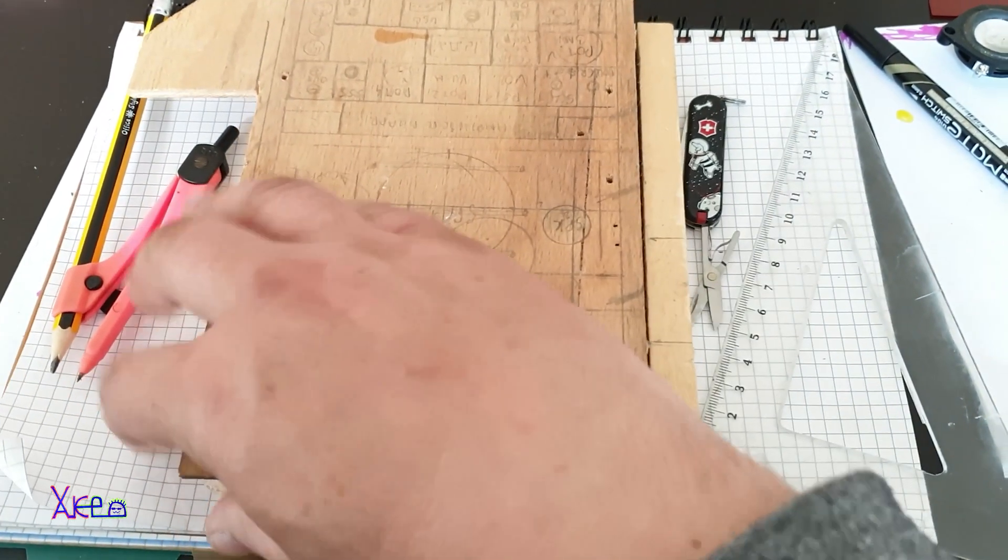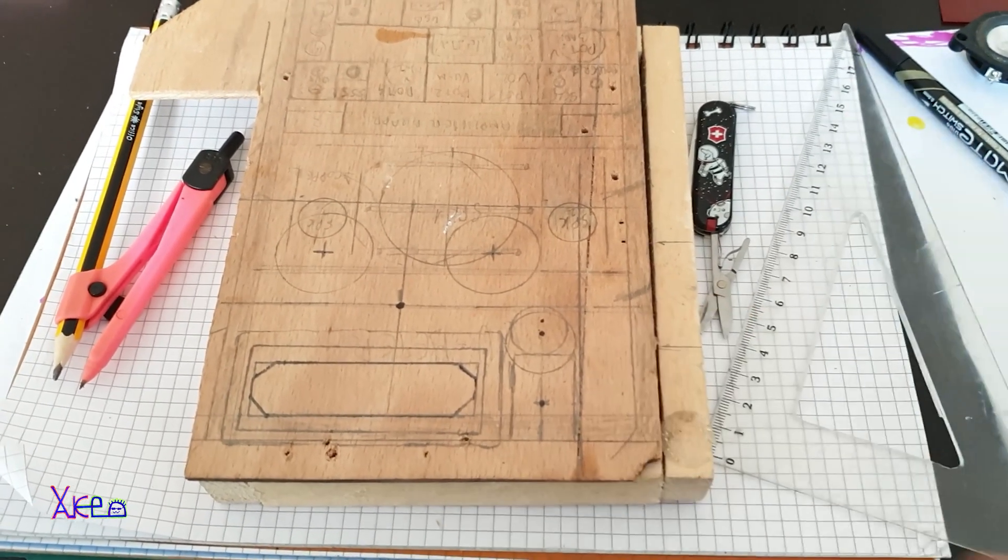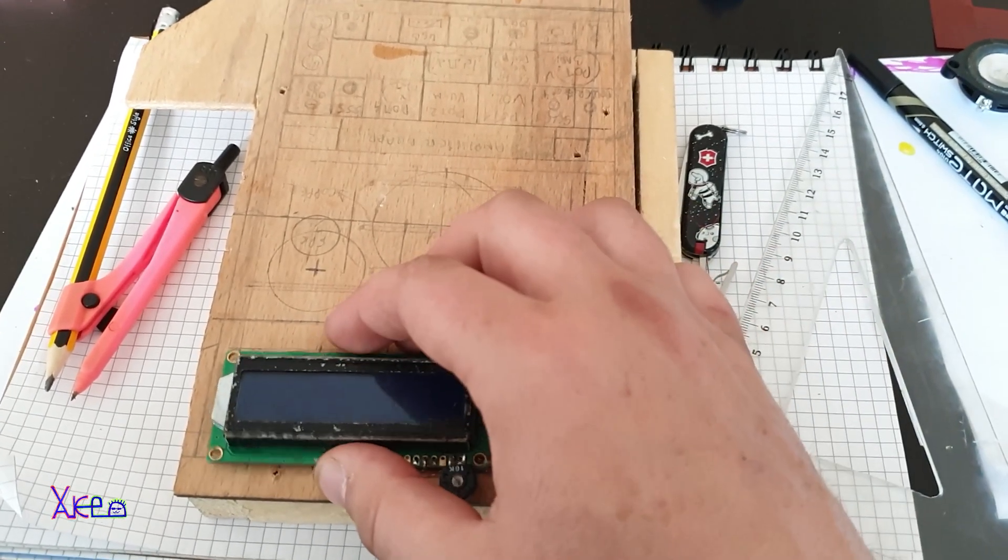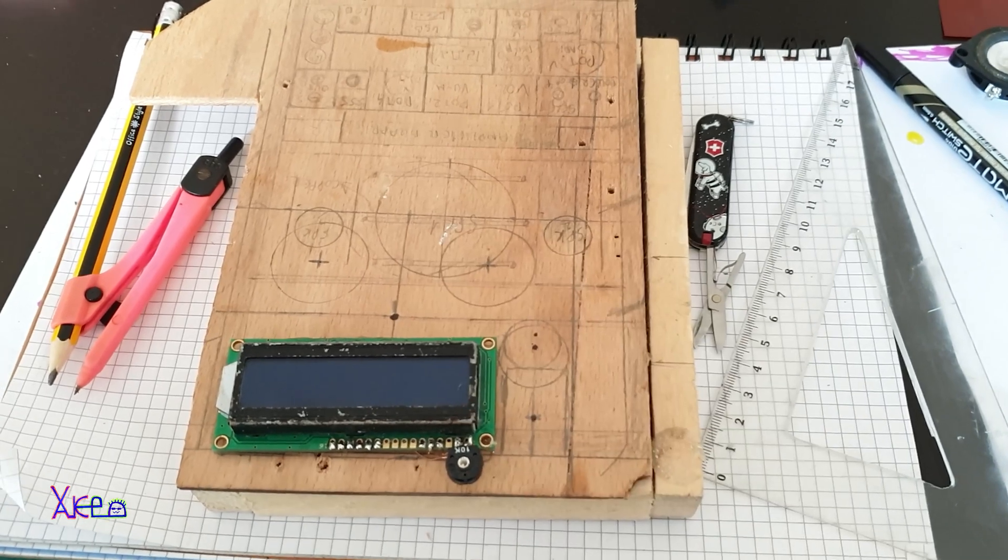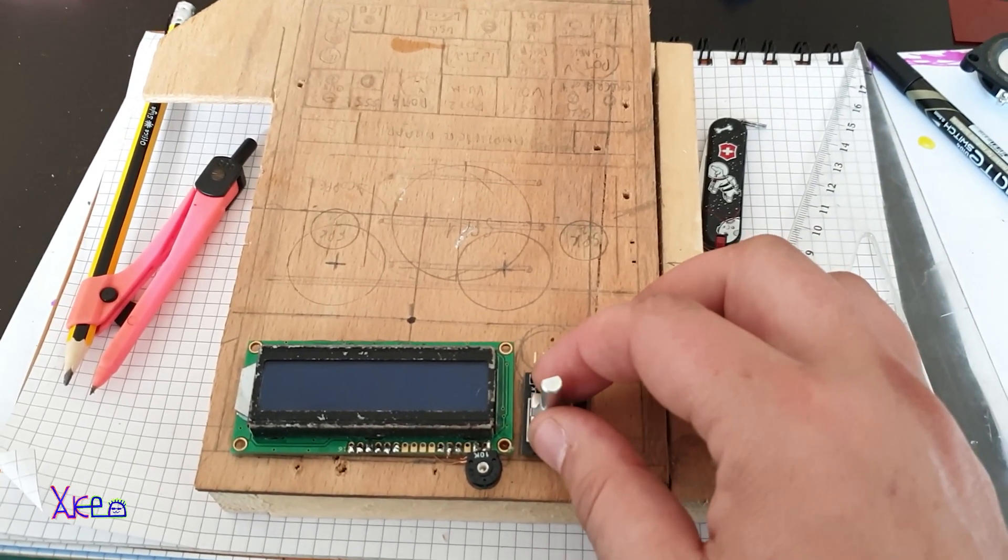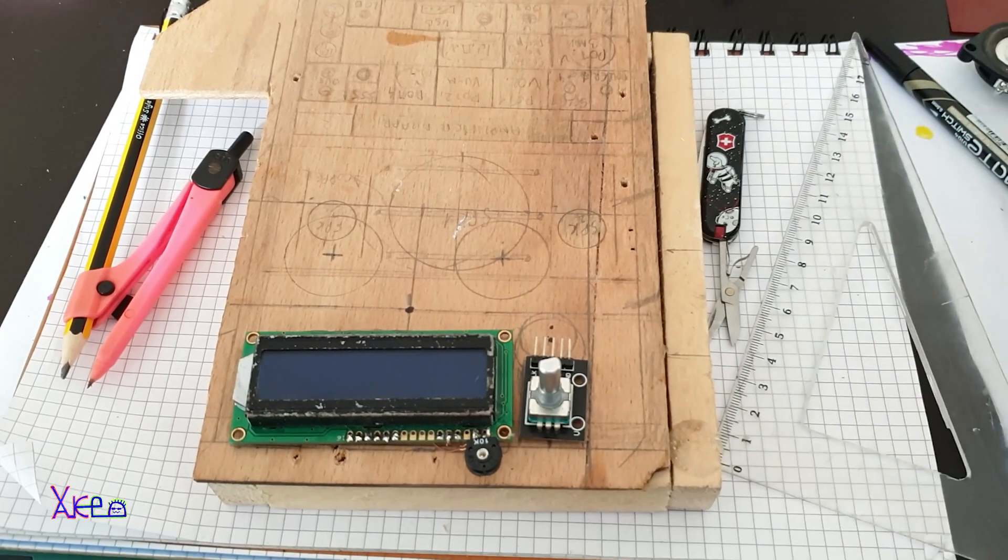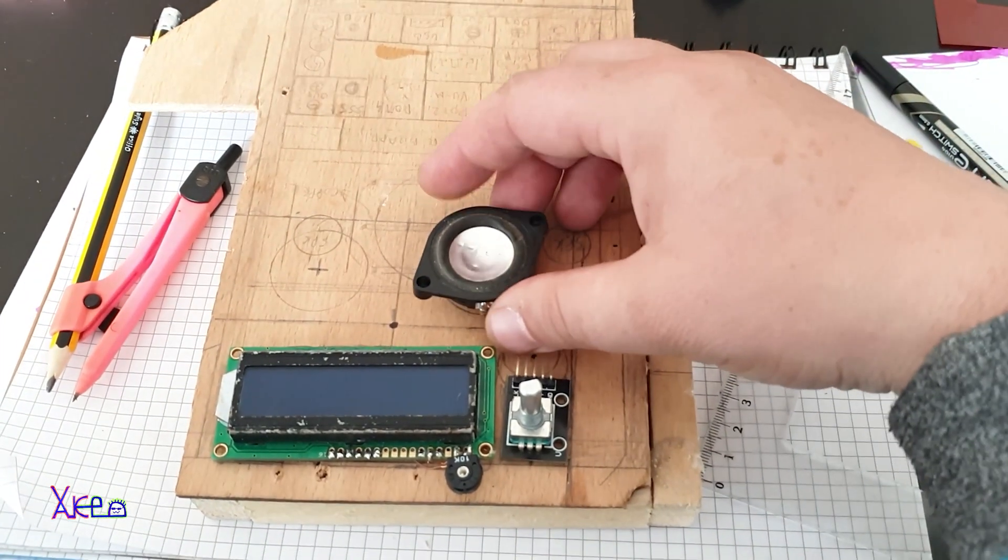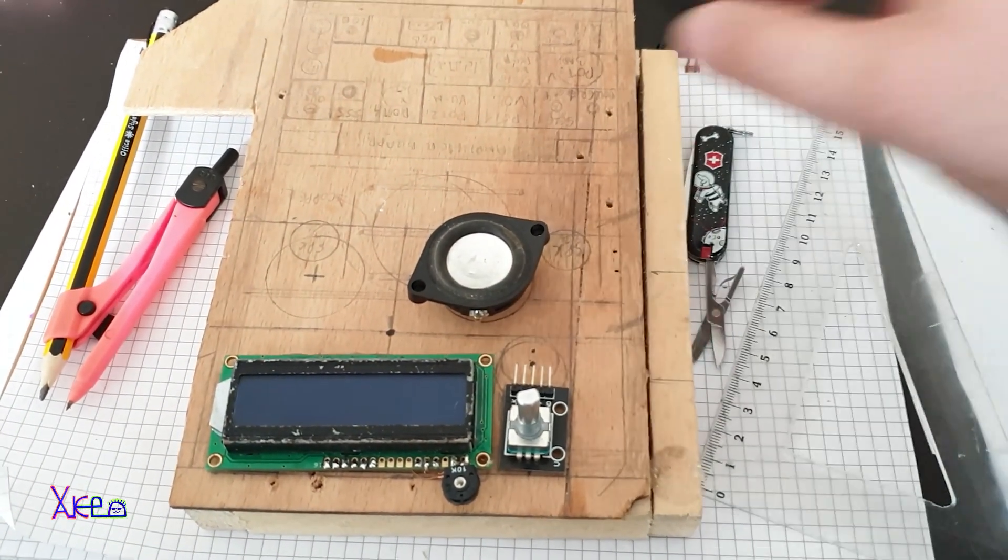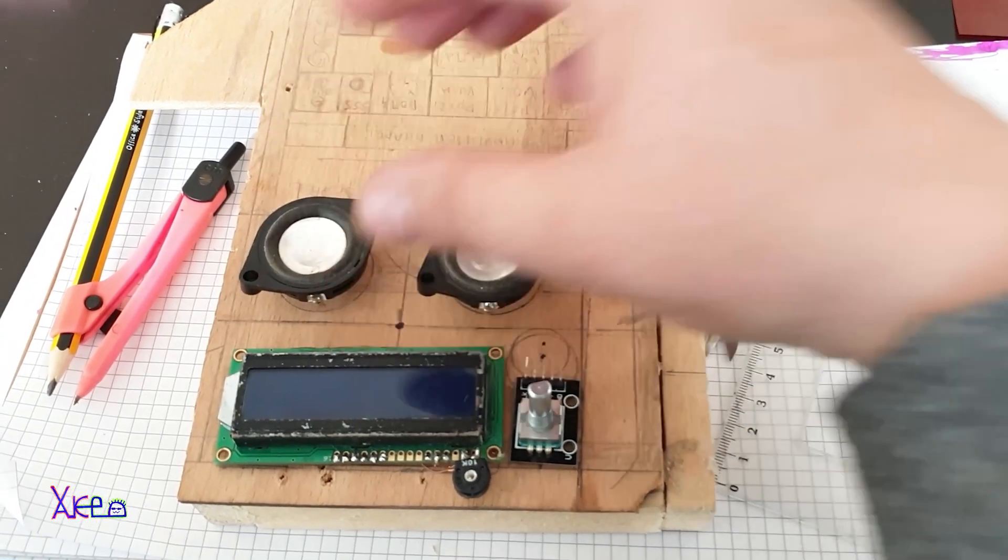And for making this you will need electronic components like an LCD display 16x2 characters, rotary encoder, two small speakers, and now I'm gonna explain the circuit diagram.